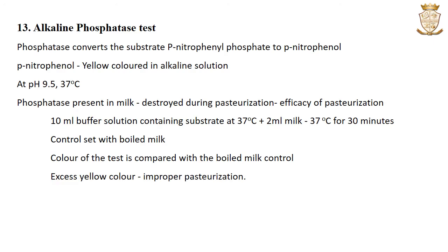The alkaline phosphatase test: this enzyme is present in milk and is destroyed during pasteurization, so the test is performed to determine the efficacy of pasteurization. The phosphatase enzyme converts the substrate para-nitrophenyl phosphate to para-nitrophenol, which is yellow-colored in alkaline solution. This reaction occurs at a pH of 9.5 at 37 degrees Celsius. For this test, 10 ml of buffer solution containing the substrate is taken in two test tubes kept at 37 degrees Celsius. Two ml of test milk is added to one tube and 2 ml of boiled and cooled milk to the other as the control.